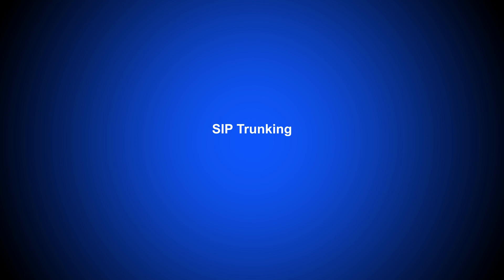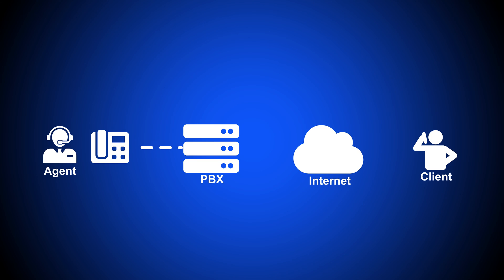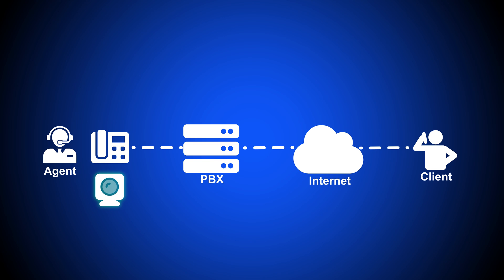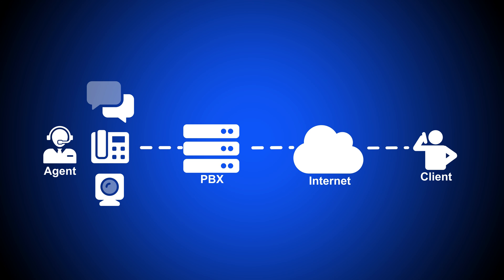SIP trunking is when a company connects a virtual phone system to its on-site PSTN system, thus integrating VoIP functionality with landline. To set up SIP trunking, a business usually purchases a session border controller — a device that controls data flow between virtual phone systems and landline. Next, the business subscribes to a VoIP service provider, who provides VoIP via a hardware or software-based SIP server. With the session border controller and SIP server connected, the company has an on-premise VoIP phone system capable of making calls via the internet and landline PSTN.